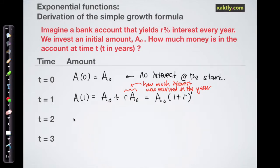All right, the end of year two. Well, I began year two with A naught times one plus r in the account. That's what I ended the last year with. And now I add on r times that amount, so a percentage of that amount. And this is the beauty of compound interest.